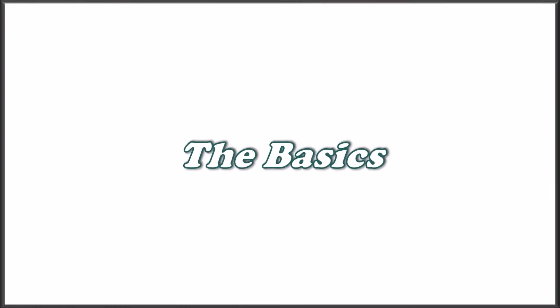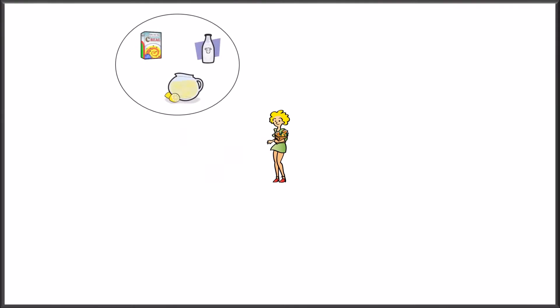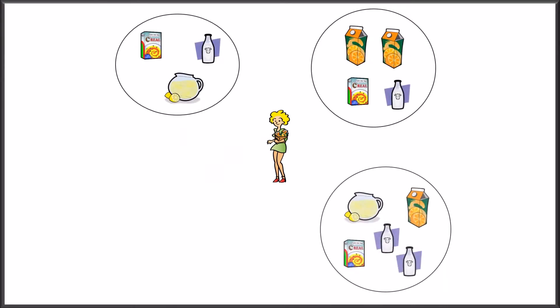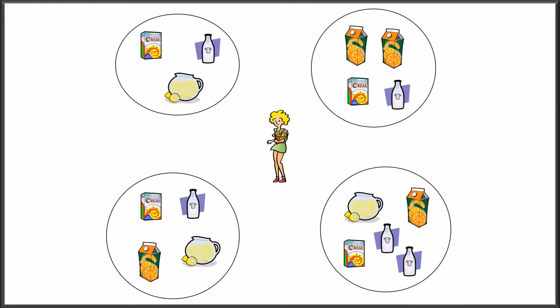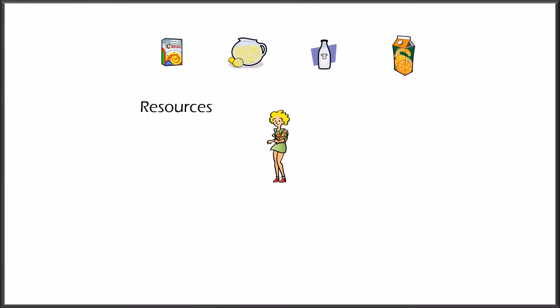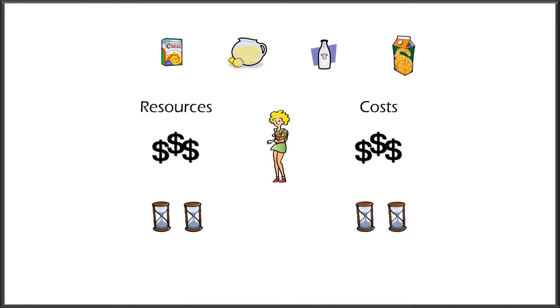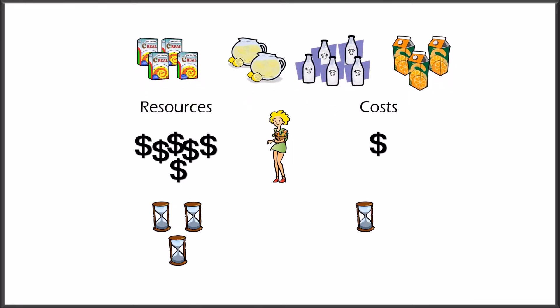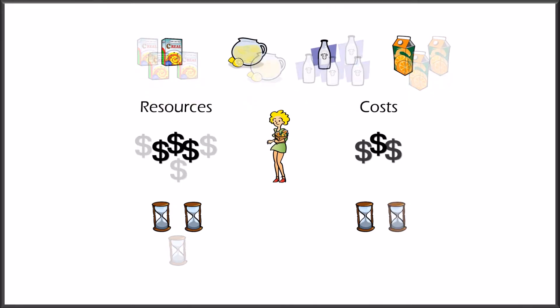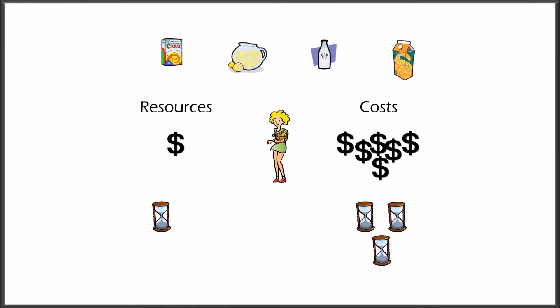Let's start with the basics. The consumption possibilities represent the different combinations of products that an individual can acquire. These combinations depend on the amount of resources the individual has, as well as the costs of these products. The most common resources needed are money and time, and costs also involve money and time. More resources or lower costs can lead to the possibility of acquiring more of a product, and the inverse is true for less resources or higher costs.